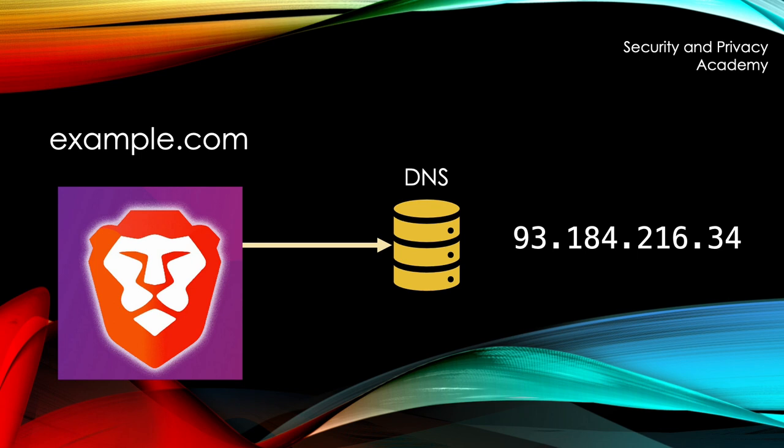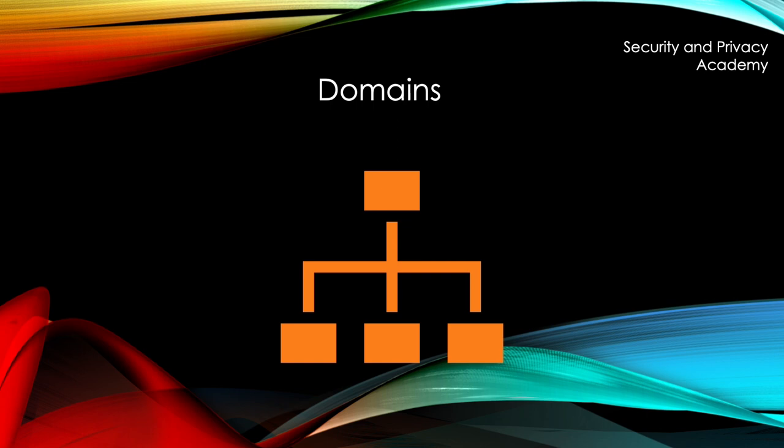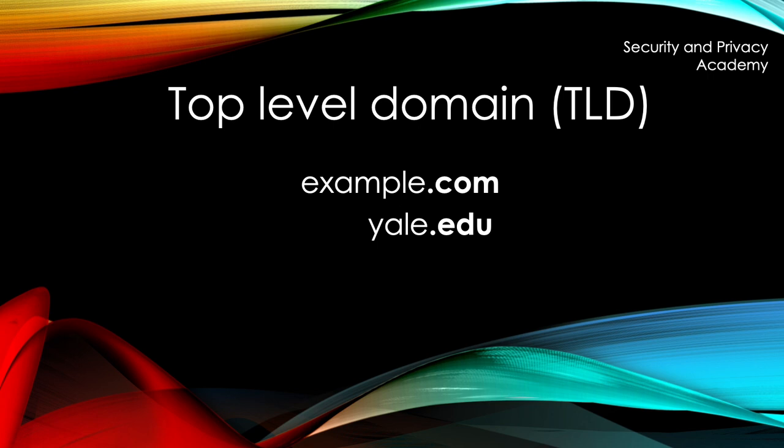The way it works is by hierarchical domains. The so-called top-level domain is the last part of any website you visit — for example, .com, .net, .edu, .de, and so on. There are four kinds of DNS servers. I will quickly illustrate how a DNS lookup works.